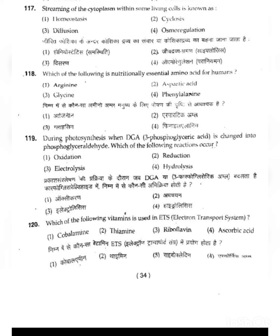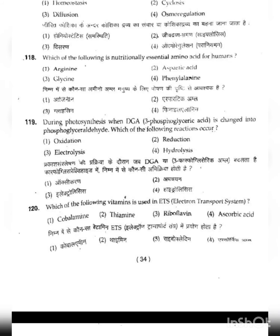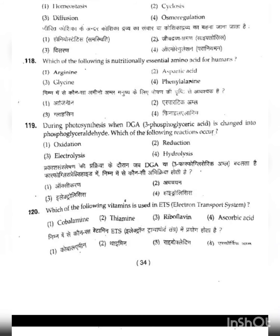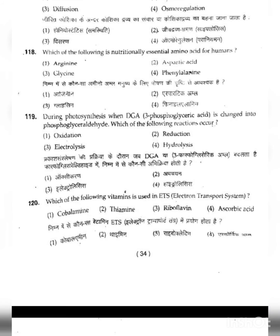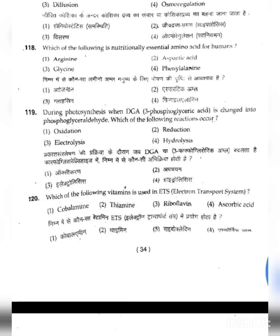Question 119: During photosynthesis, when 3-phosphoglyceric acid (PGA) is changed into phosphoglyceraldehyde (PGAL), which reaction occurs? The options are oxidation, reduction, electrolysis, or hydrolysis. Here, reduction takes place — there is no oxidation, no hydrolysis, and no electrolysis. So the correct option for question 119 is reduction (option 2).